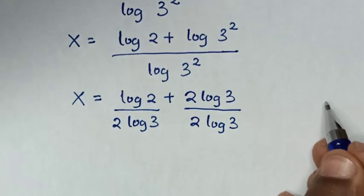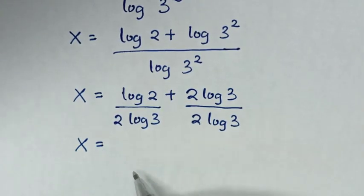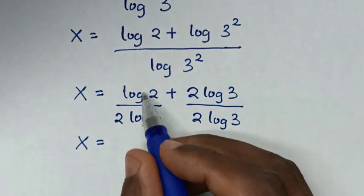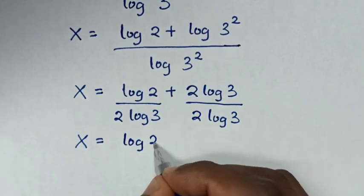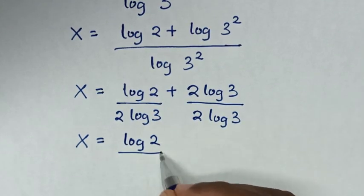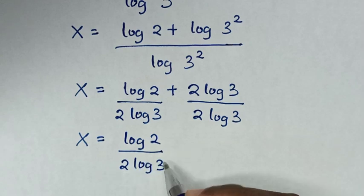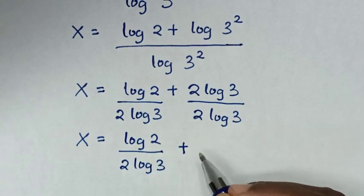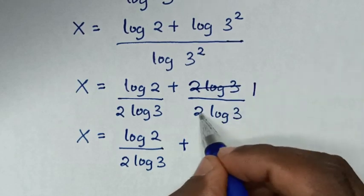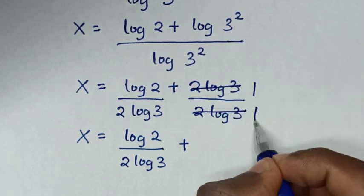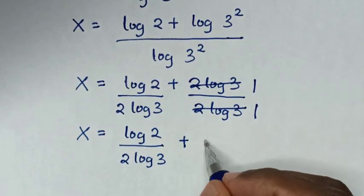Then in the next step, it will be x is equal to log of 2 over 2 log of 3, then plus 1. In here we'll simplify — this will cancel by 1 and this by 1, so 1 over 1 is 1.